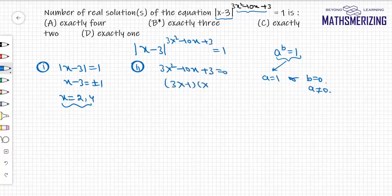Factoring: (3x - 1)(x - 3) = 0, giving x = 1/3 and x = 3. But we also need to check that a ≠ 0, so x cannot be 3.